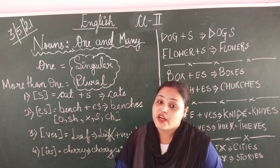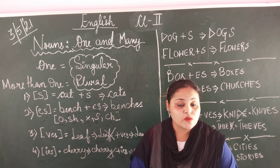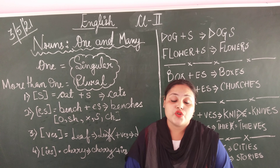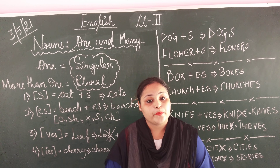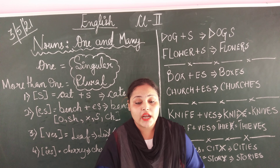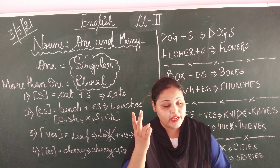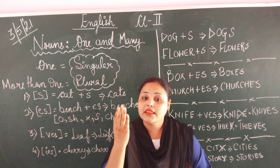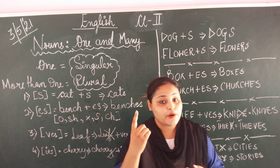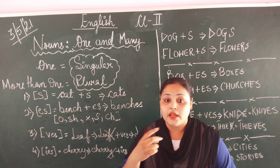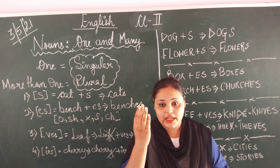First we are going to look at nouns. In the last chapter we have studied nouns. So tell me students, what are nouns? Nouns are names of a person, place, animal and thing. Repeat along with me: nouns are the names of a person, place, animal and thing.